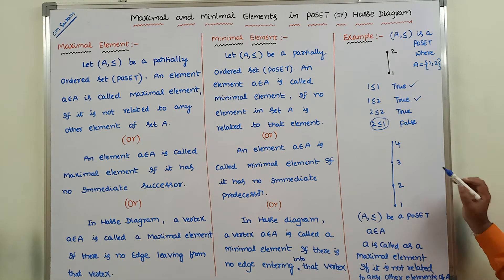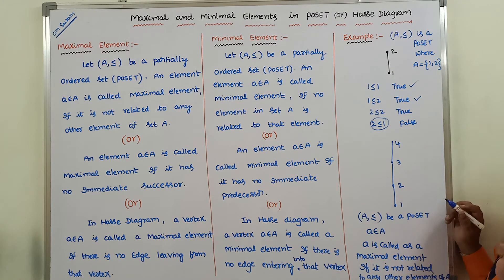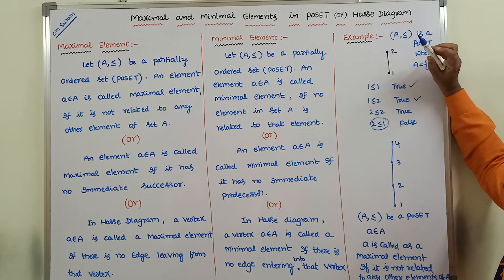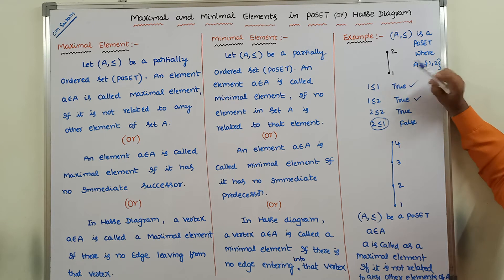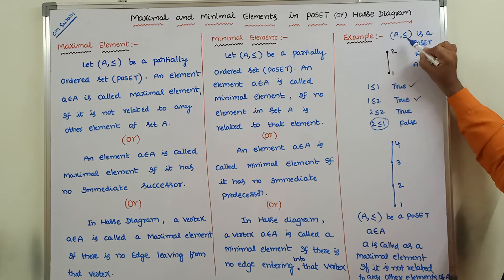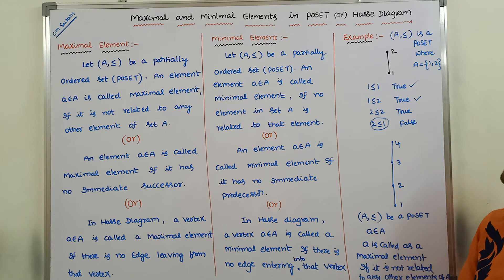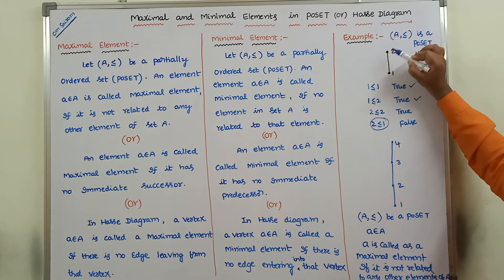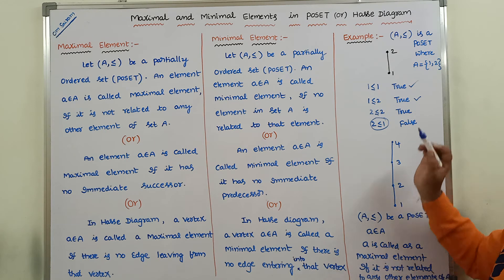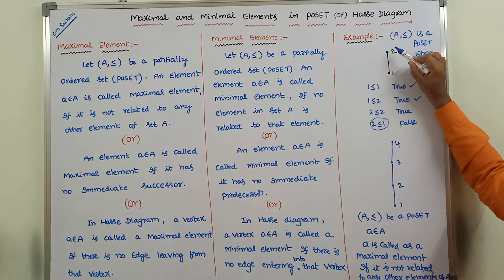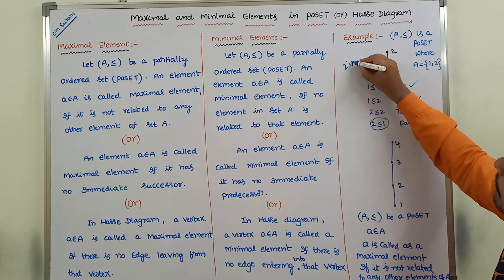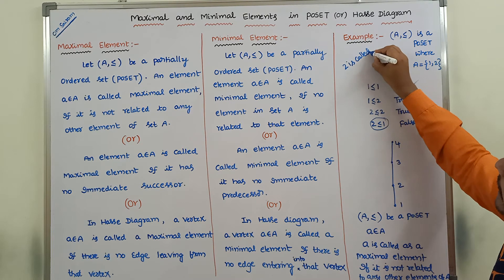Consider this Hasse diagram with set A = {1, 2}. Element 1 is related with 1, and 1 is related with 2. But element 2 is not related to any other element of set A — after 2, no element exists. Hence, we can say that 2 is called a maximal element.